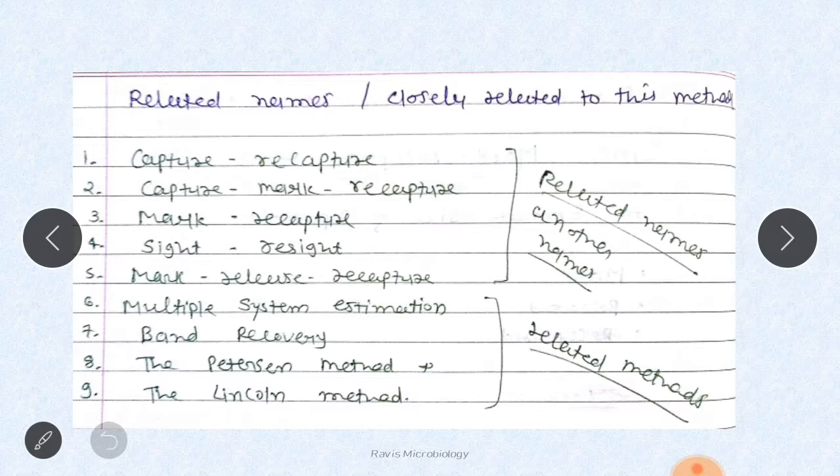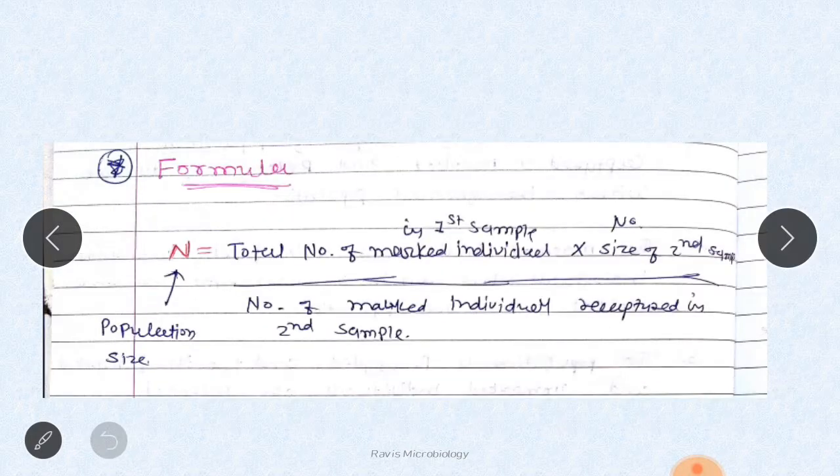Other names include capture-recapture, capture-mark-recapture, mark-recapture, sight-resight, and mark-release-recapture. Related methods include multiple system estimation, band-recovery, the Petersen method, and the Lincoln method.